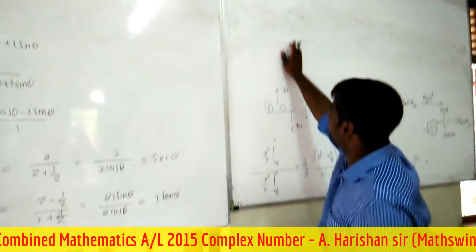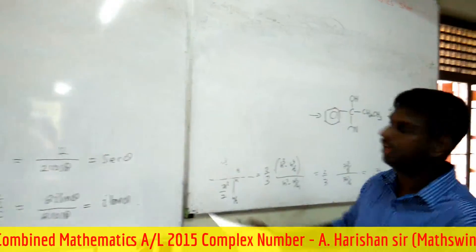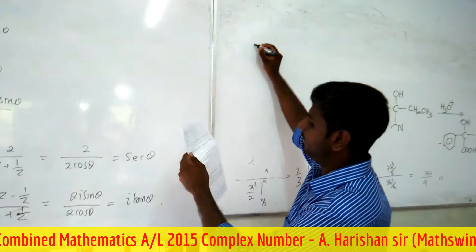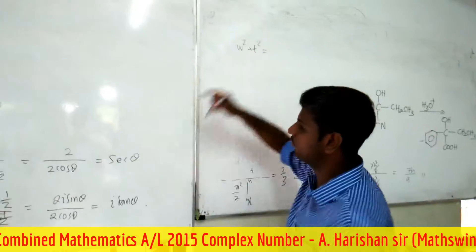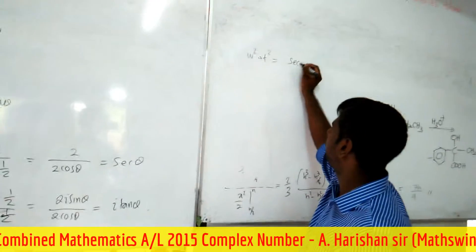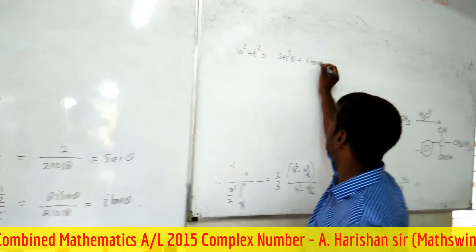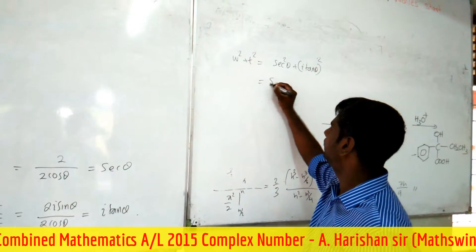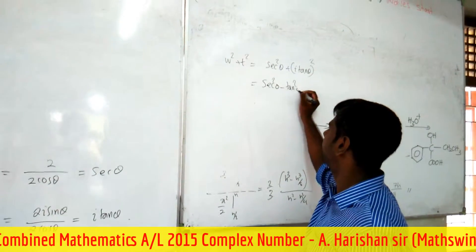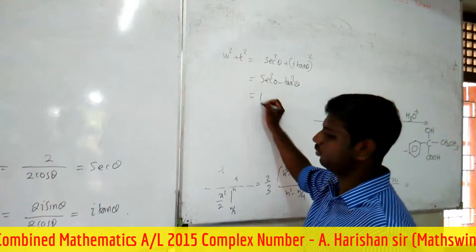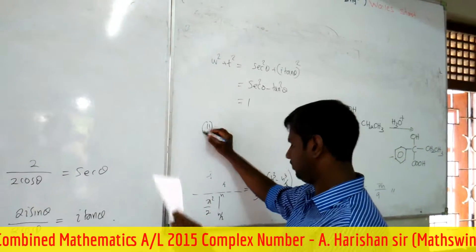Now they say find w² + t². w² = cos²θ, and t² = (i tan θ)² = −tan²θ. So w² + t² = cos²θ − tan²θ = 1. That is what they require for the second part.